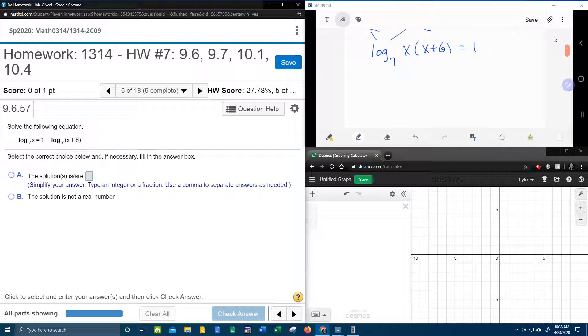Now, look what I've got at this point. I now have the log of some stuff equals a constant. Now that we have it condensed down to one log, we can now convert to an exponential. So we're going to bring the base down, switch the other two around. The 1 is going to become the power for the 7. The x times x plus 6, I'm going to go ahead and do the distributive property on the fly as I bring it down. So that will be x squared plus 6x.